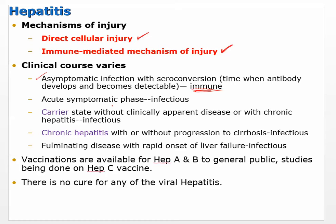There's an acute symptomatic phase associated with infections. There's also a carrier state without clinically apparent disease or with chronic hepatitis — you may have a virus with no apparent disease, but you still have it and are a carrier, meaning you can transmit the disease to someone else.